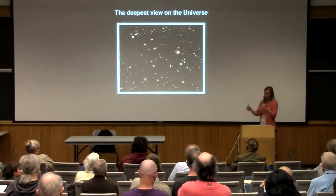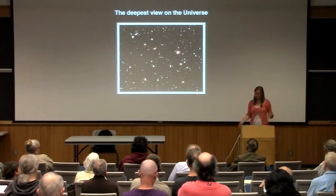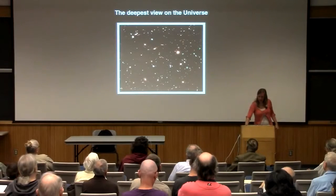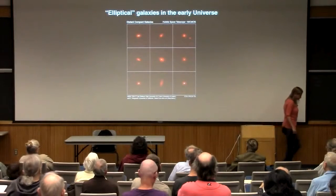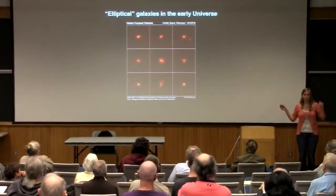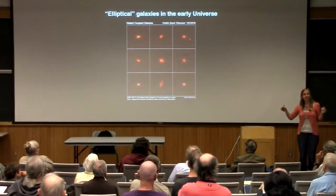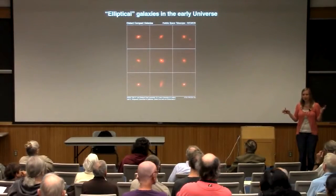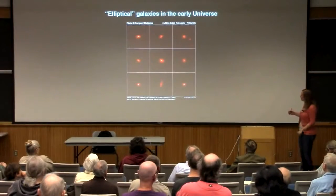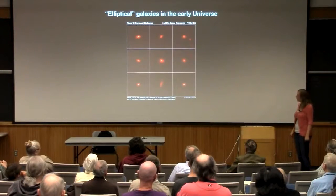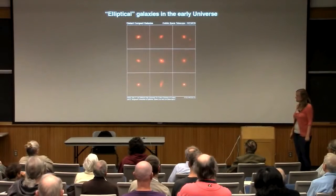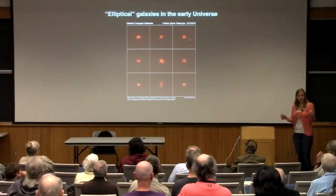I'm going to focus on the universe when it was about 3 billion years old — that's one of my favorite times. Here you see how elliptical galaxies looked then. The quality is not as good, obviously, because they're very far away, so we don't have the resolution yet to make really nice images — it's a little fuzzy. But this gives you an idea of what elliptical galaxies looked like when the universe was about 3 billion years old.